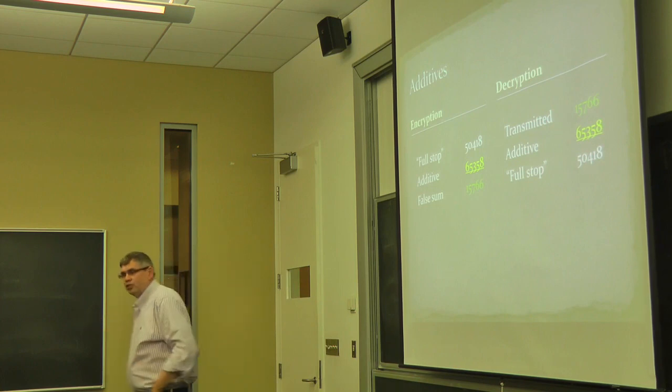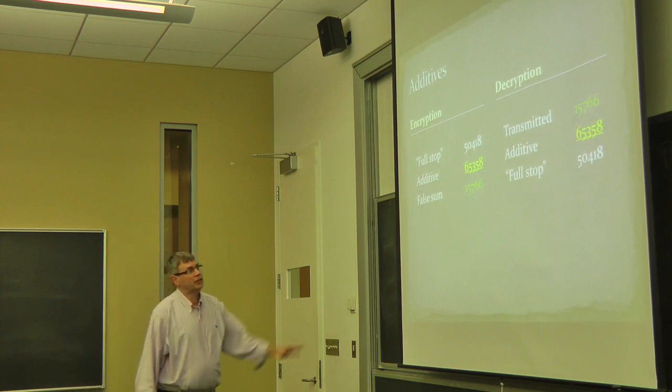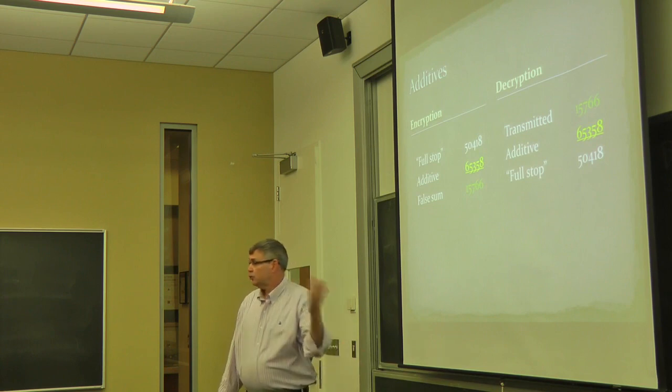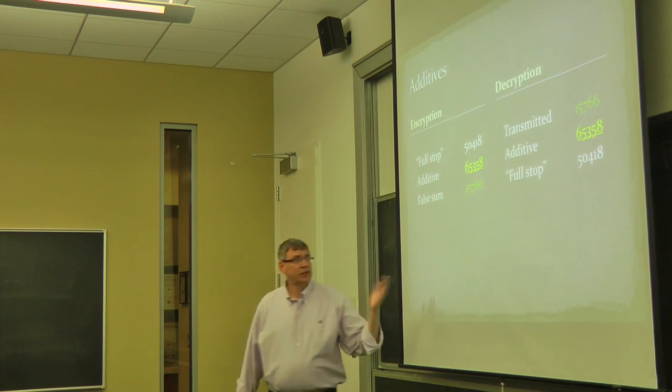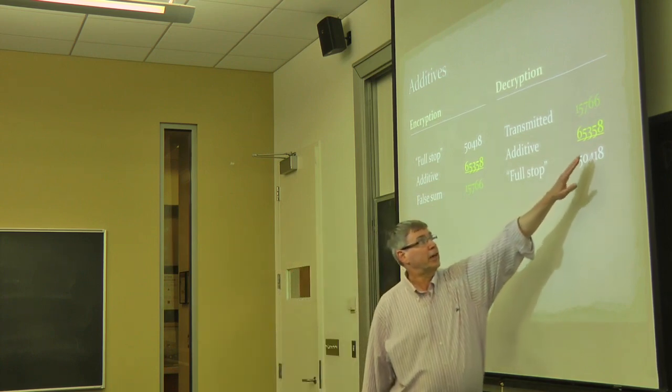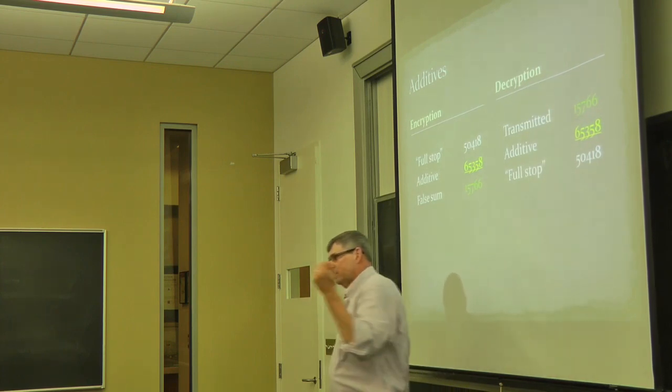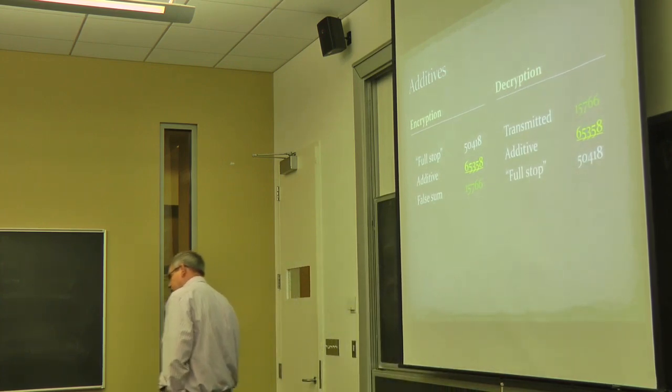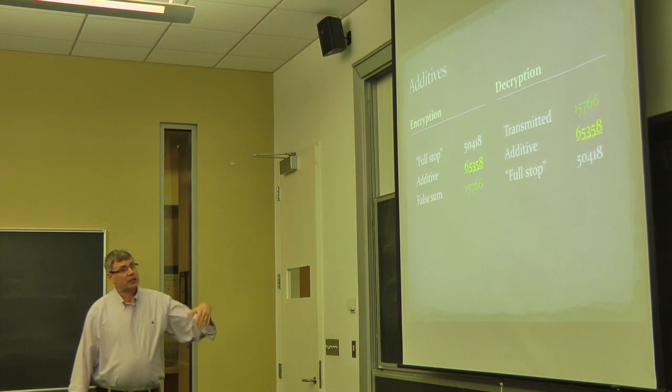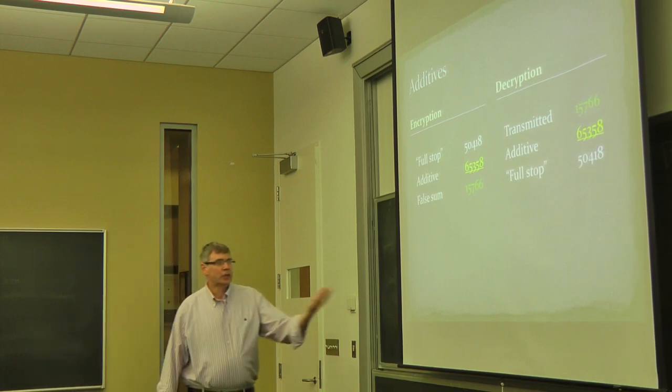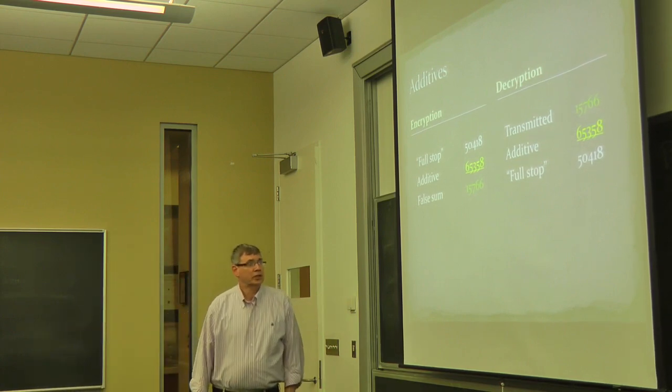Now, when the message was received, the operator who received it then would take that transmitted false sum, strip off the additive. And they stripped off the additive by doing a false subtraction. So here, 8 from 6, you have to keep thinking 8 from 16 or think subtraction mod 10. They get back the code group, look it up in the book, and they know what it stands for.